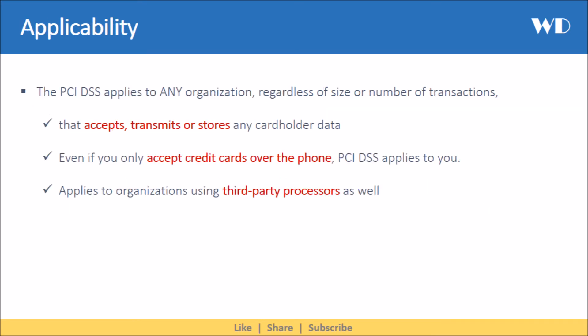Let's understand to whom does the PCI DSS apply. The PCI DSS applies to any organization, regardless of size or number of transactions, that accepts, transmits or stores any cardholder data. Even if you only accept credit cards over the phone, PCI DSS applies to you. It also applies to organizations using third-party processors.